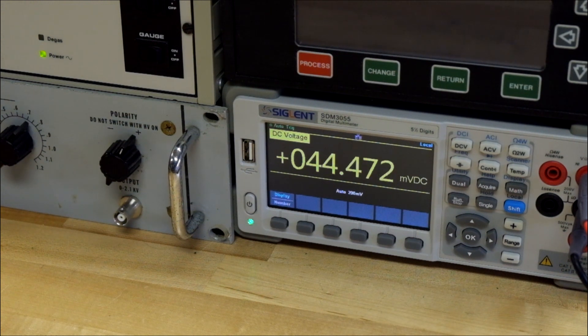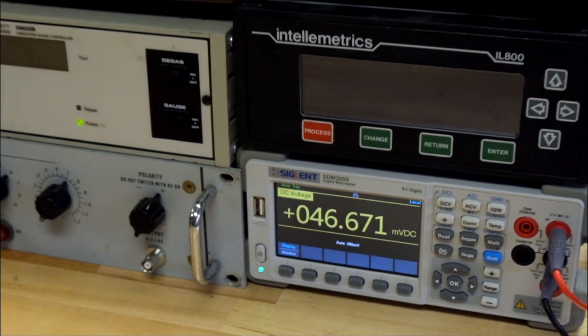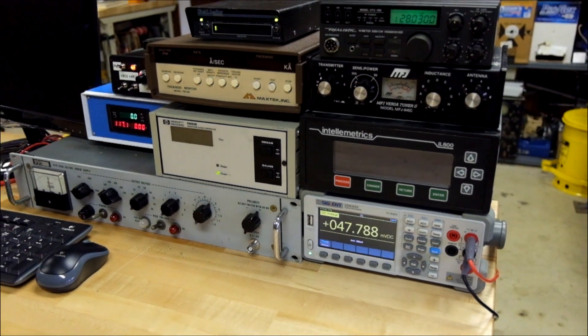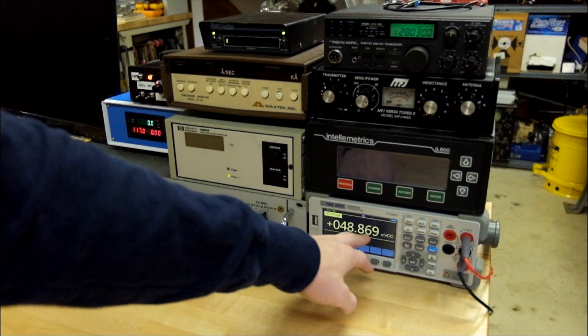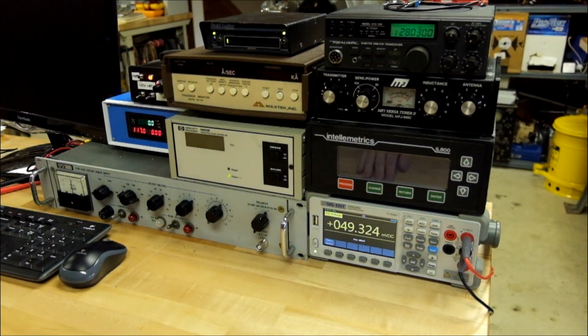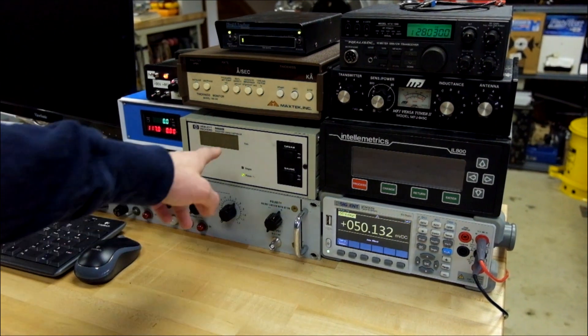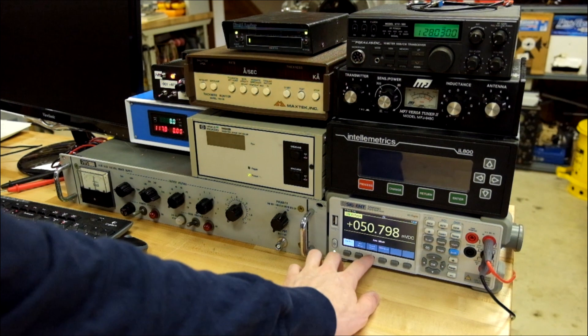And this gauge is going to bottom out soon, so we're at 4.4 millitorr. Alright, this gauge is basically bottomed out, because the pressure is going back up here. That's just going to move around a little. Now at this point, that reading is basically meaningless. So I'm going to switch on this controller, the ionization gauge controller.